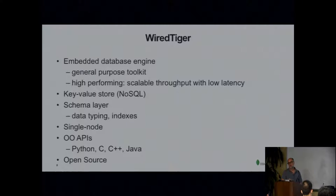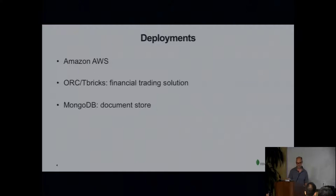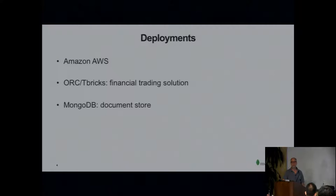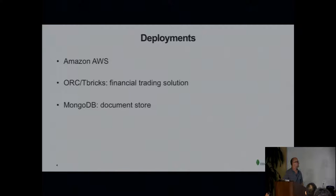We support Python, C, C++, and Java. We're open source, of course. Right now we have a couple of fairly large customers. Amazon AWS — a big chunk of the cloud database support that Amazon AWS sells goes through a WiredTiger engine. We also sell to people who do financial trading solutions. Amazon are the people that really don't want to lose their data, and Orca and Tbricks are the people that really want queries to happen very, very quickly. And then MongoDB, which is a next generation general purpose document store.